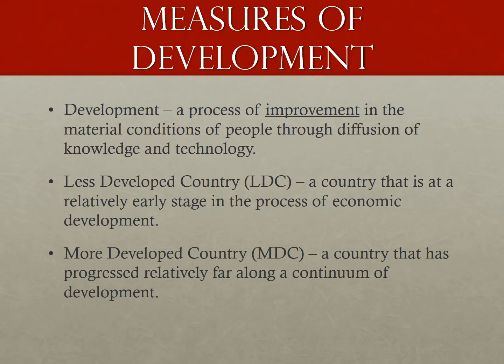All countries began as less developed countries, or LDCs, which is a country at a relatively early stage in the process of economic development. As countries make improvements, they move toward being a more developed country, or MDC, which is a country that has progressed relatively far along a continuum of development. Notice that it says continuum — it's not just two boxes, more and less. It's a spectrum, a line. All countries fall somewhere on that line.